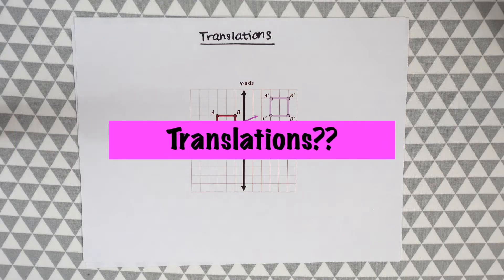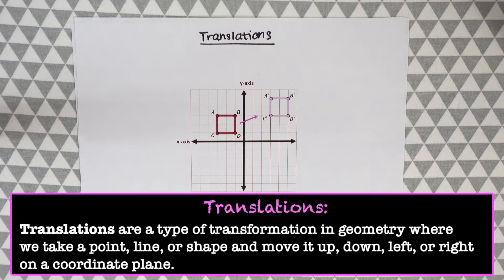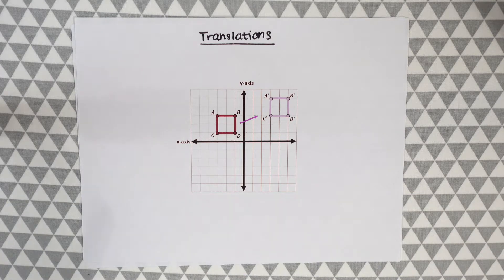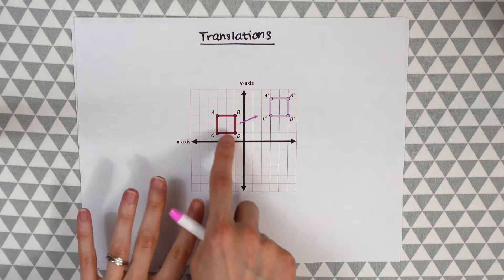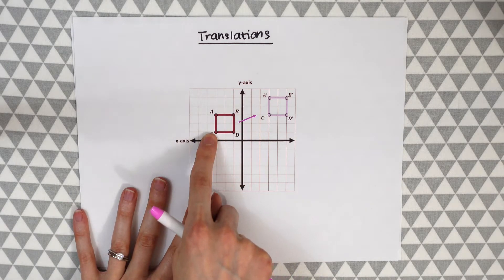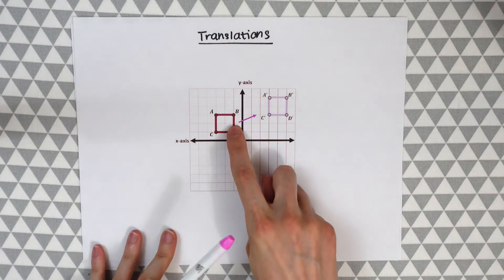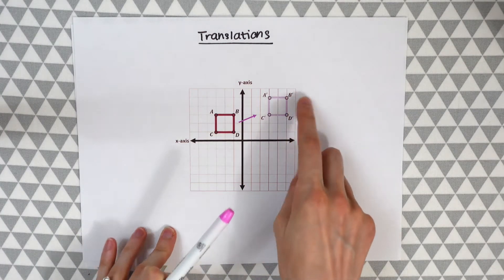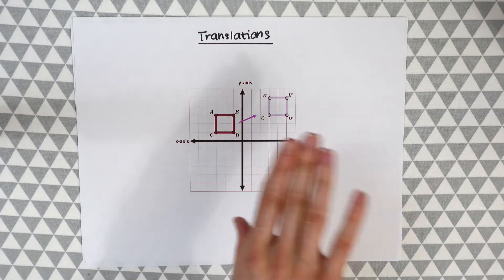So first let's start off with what translations are. Translations are a type of transformation in geometry where we take a point, line, or shape and move it up, down, left, or right on a coordinate plane. Here we see an example of a translation — we just went from square ABCD to square A'B'C'D'. All we did was move it a couple units up and a couple units over.